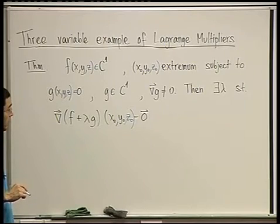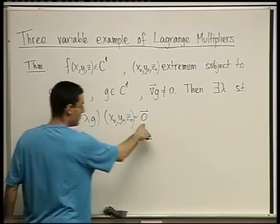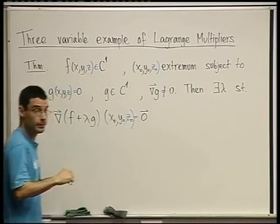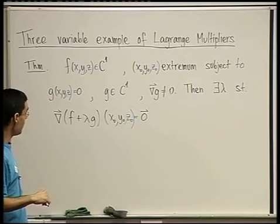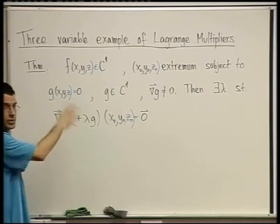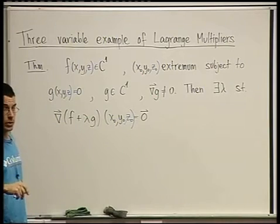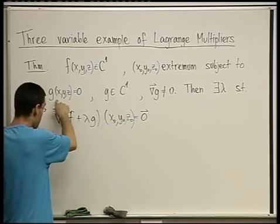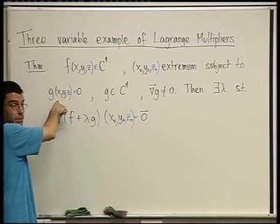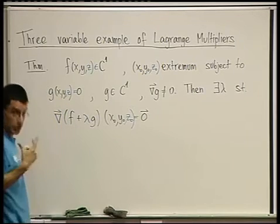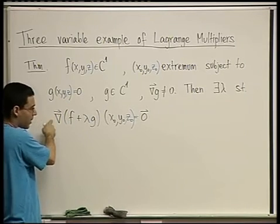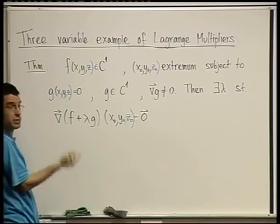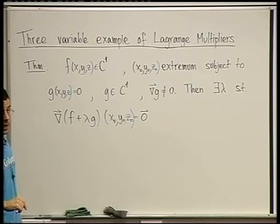That's what the theorem looks like. Having written zero here as a vector means I don't need to change anything, but now it's the (0, 0, 0) vector. Everything's in three variables now. And how many equations are we going to have when we use this theorem? We're going to have four equations. One is going to be the equation g equals zero — meaning the points we're looking for satisfy the constraint — and the three other equations come from the gradient condition: the derivative with respect to x, y, and z all have to equal zero.